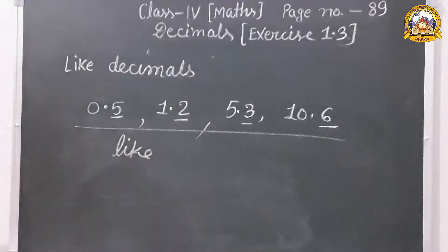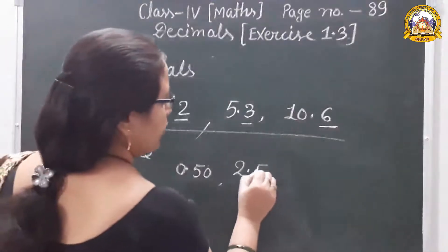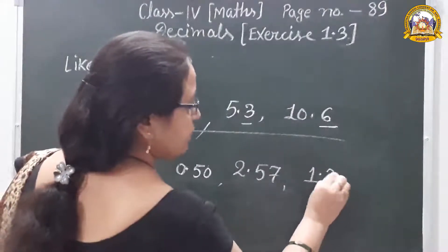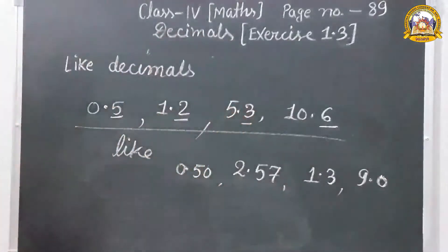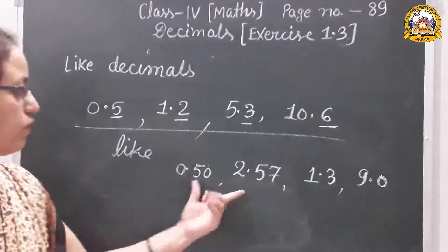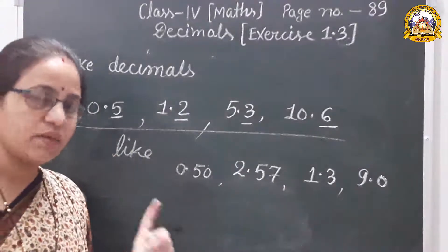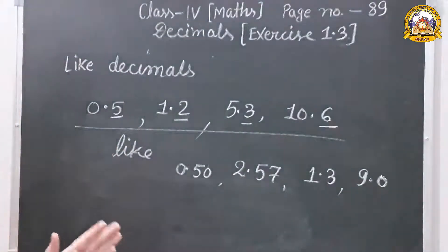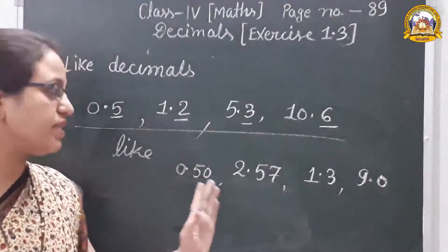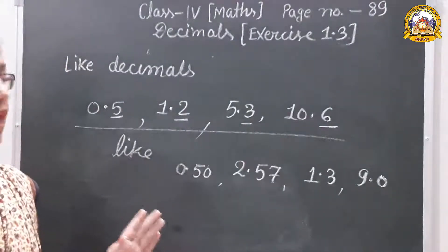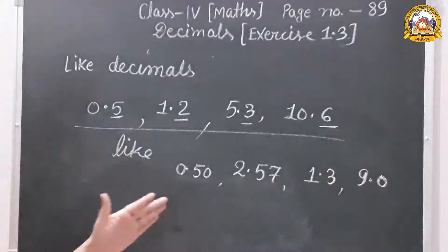Now suppose the numbers were 0.50, 2.57, 1.3, and 9.0. Two numbers have two decimal places and two numbers have one decimal place. This means they are unlike decimal numbers. When each decimal number has the same number of decimal places, we call them like decimals.